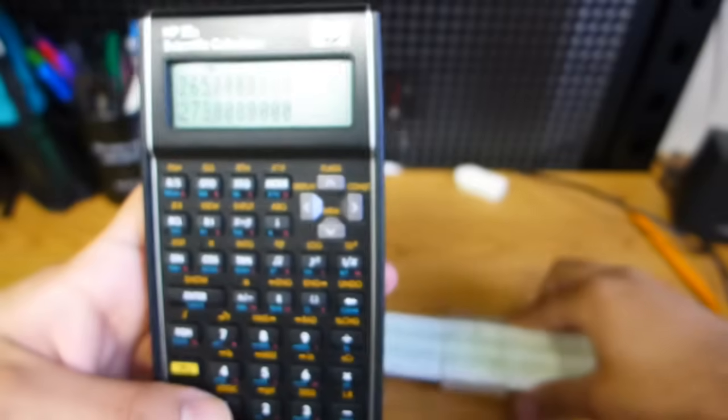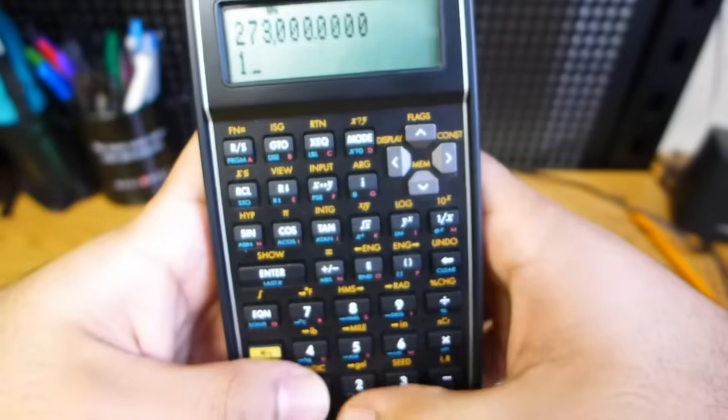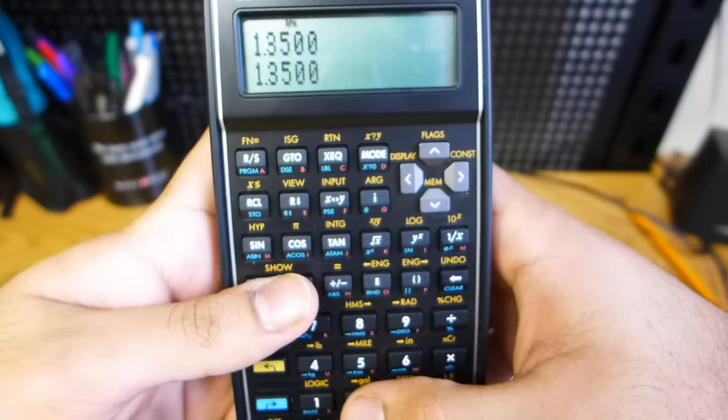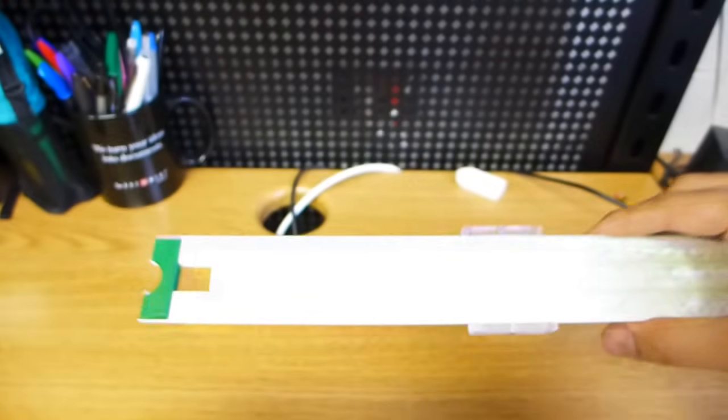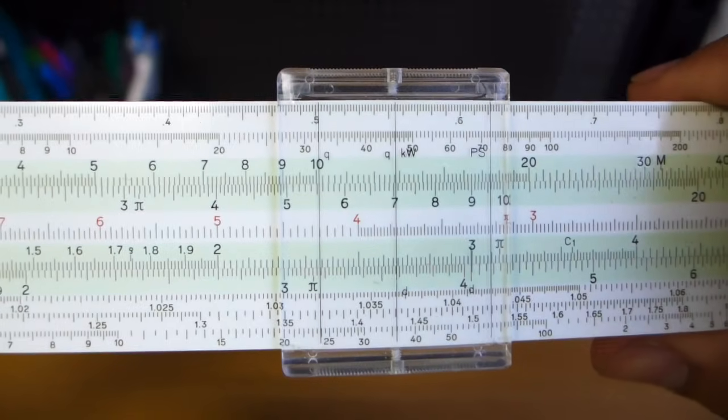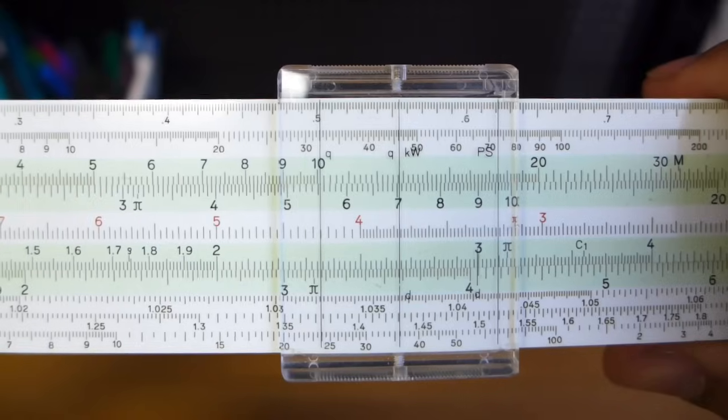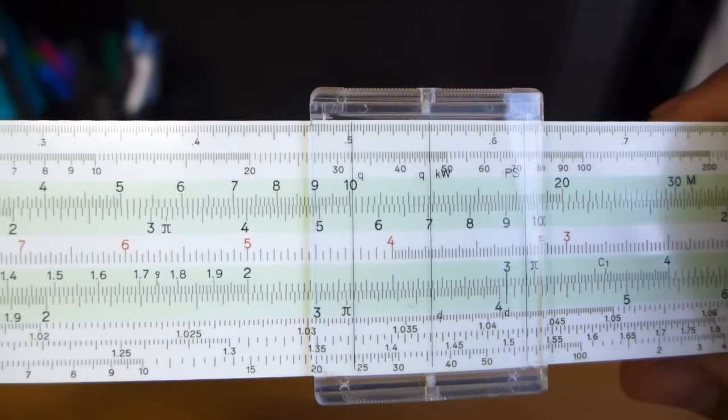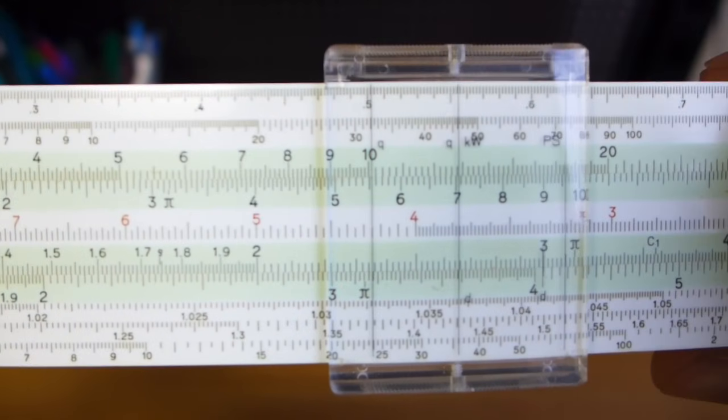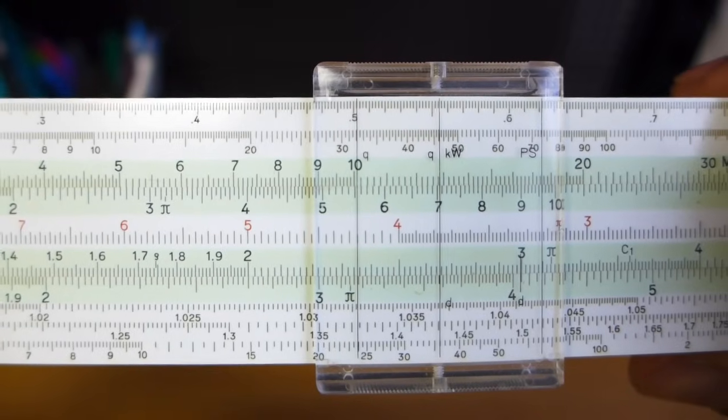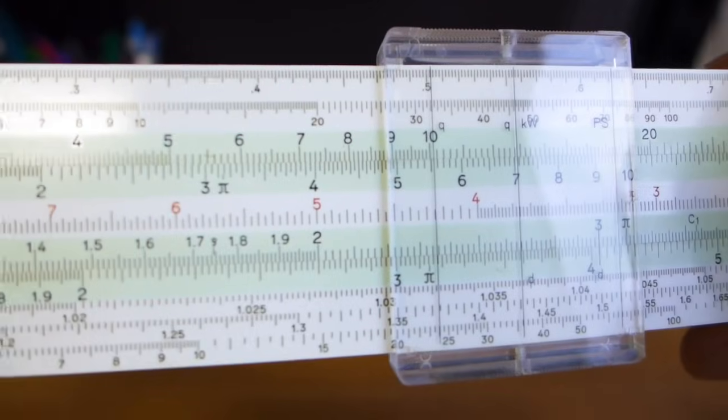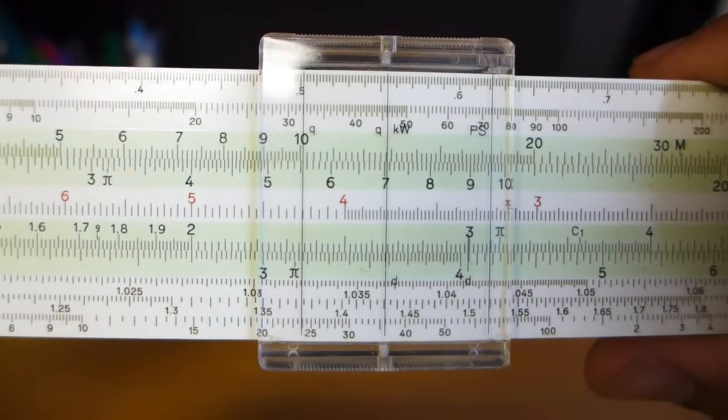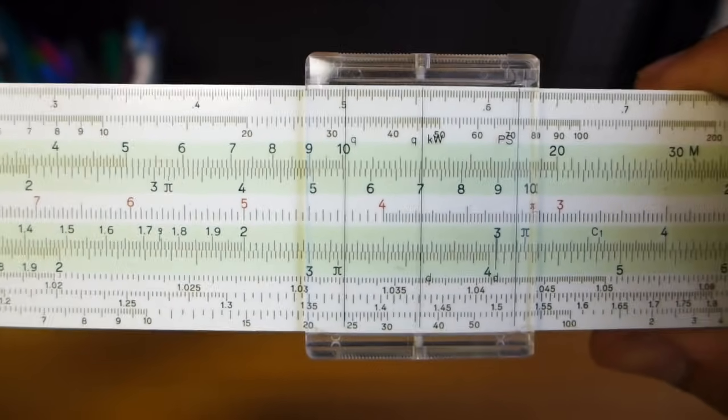Let's see, 1.35 times 2.65, 3.57. So we have 3.57, that's about right. With a slide rule, you can get up to three significant digits of accuracy. And the third significant digit is typically a sort of a guess, especially if you're at an amateur level like I am. But that's how you do multiplication on a slide rule.